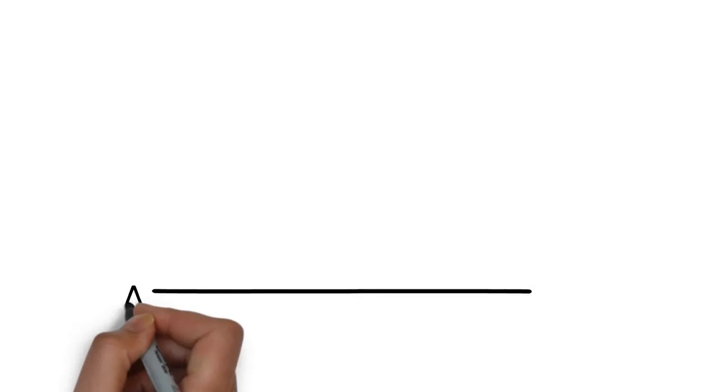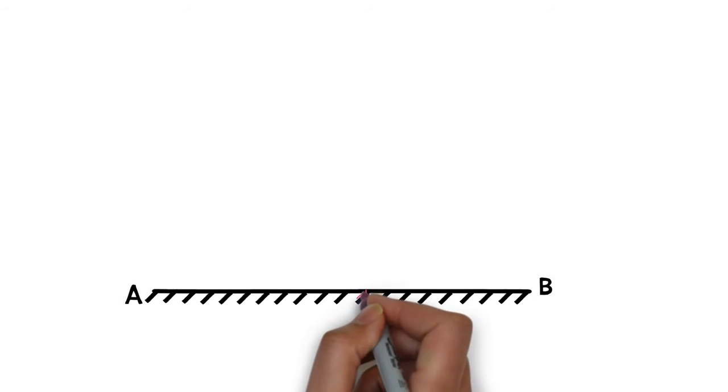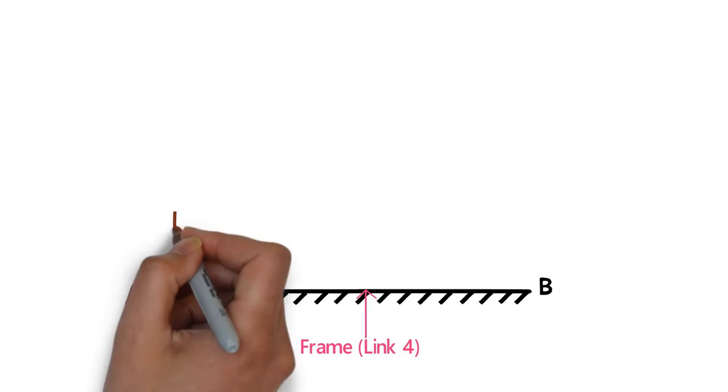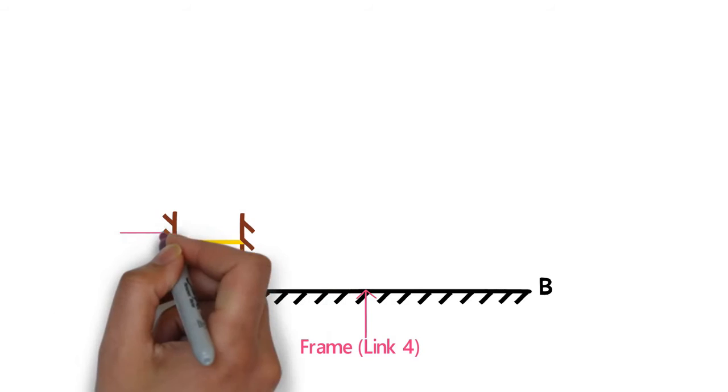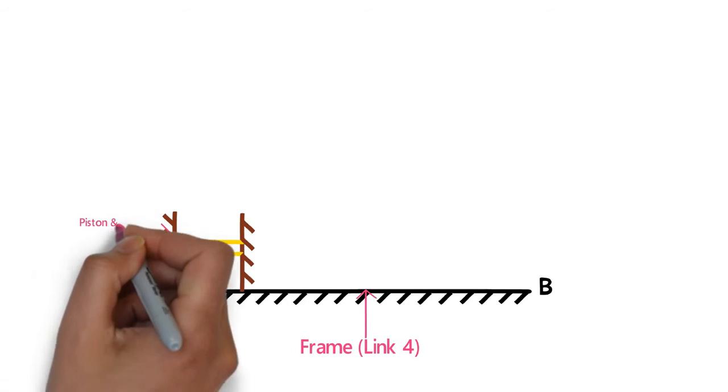This mechanism consists of 4 links, out of which link AB is fixed. Say this is link number 4. One piston and cylinder assembly is mounted on the frame, that is on link number 4.